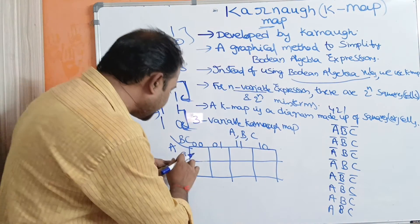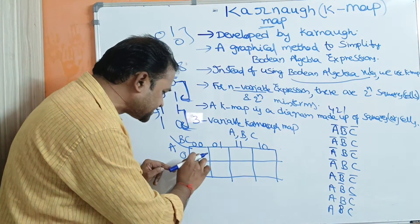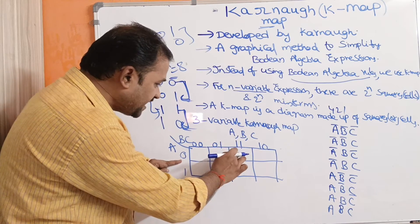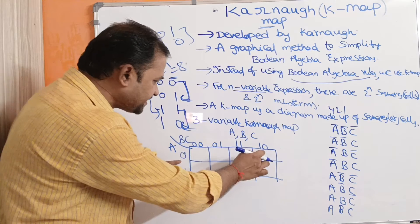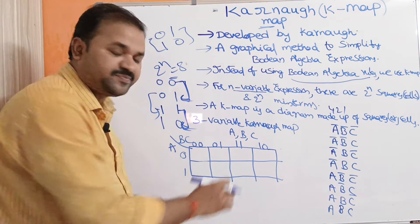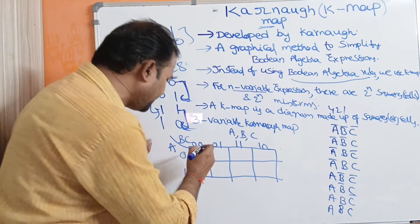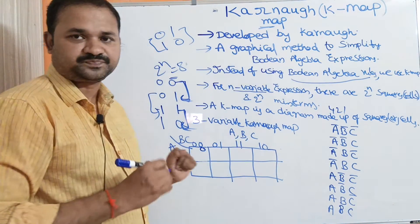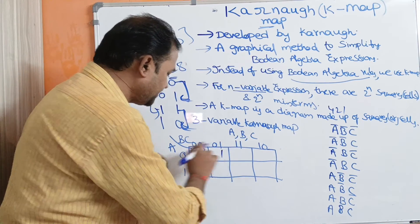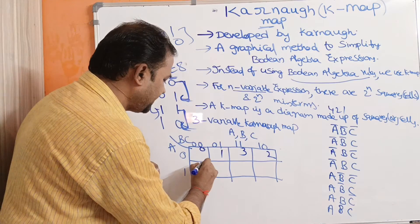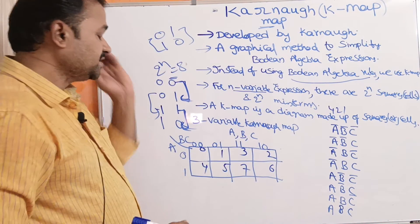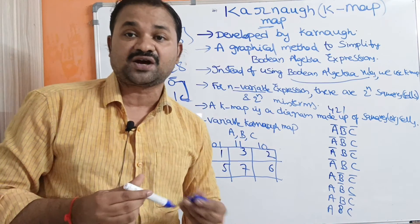Now let us see the combinations in the cells. The cell 0,0,0 represents A-bar B-bar C-bar, which is minterm 0. The cell 0,0,1 represents A-bar B-bar C, which is minterm 1. The combinations 0,1,0 and 0,1,1 are minterms 2 and 3. The row with A=1 gives 1,0,0 = 4; 1,0,1 = 5; 1,1,0 = 6; and 1,1,1 = A B C = minterm 7. Likewise, we can use 2-variable, 4-variable, or 5-variable Karnaugh maps, which we will see in future videos.